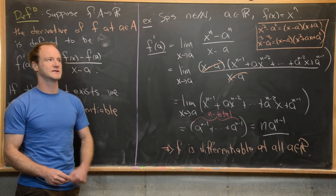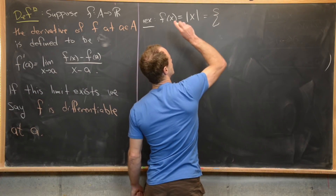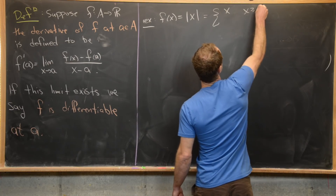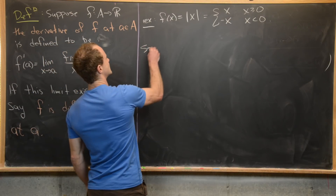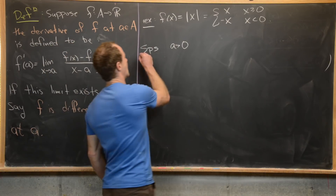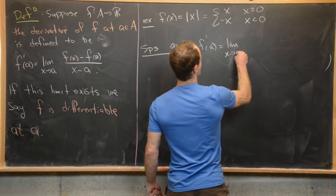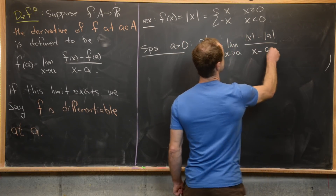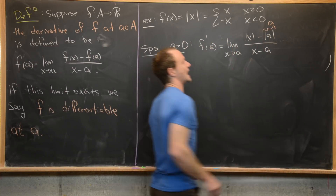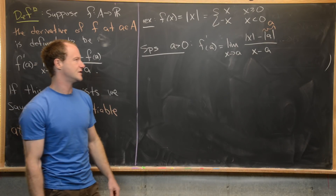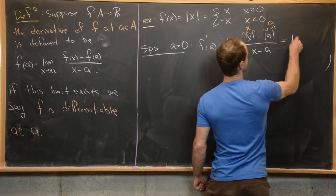Now let's look at a non-example — a function which is not differentiable somewhere. We're going to look at the absolute value function. Recall that it can be defined piecewise as x if x ≥ 0, and −x if x < 0. Suppose first that a is greater than zero and calculate f prime of a. That's the limit as x goes to a of |x| minus |a| over x minus a. Since a > 0, |a| equals a, and since x is approaching a, all important values of x are also positive, so |x| equals x. We get x minus a over x minus a, so the derivative is 1.